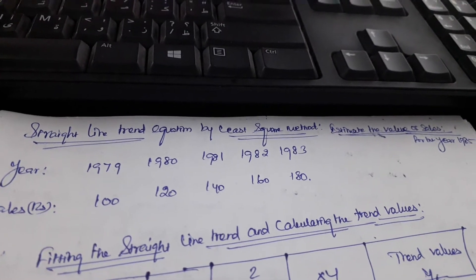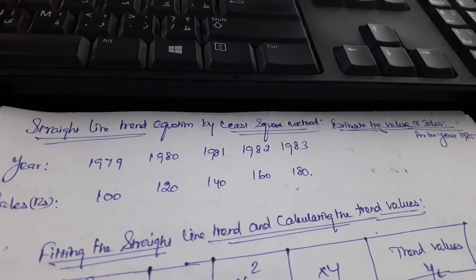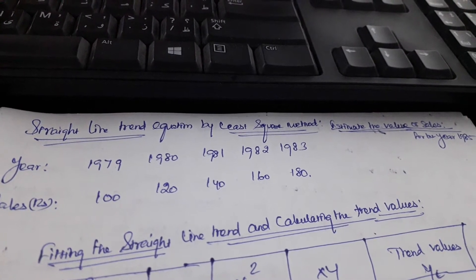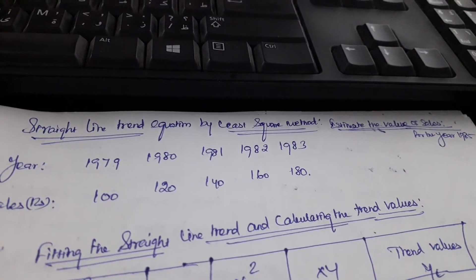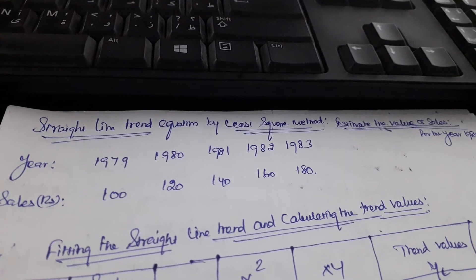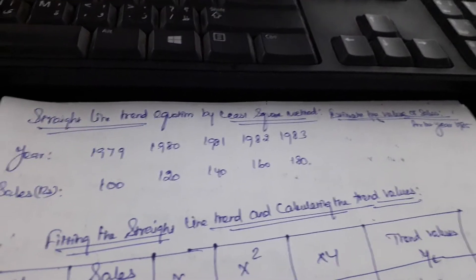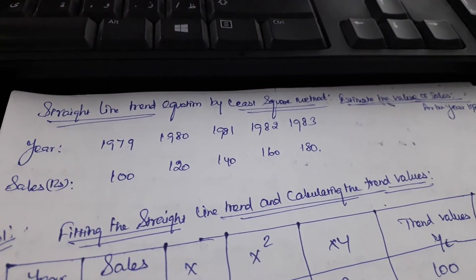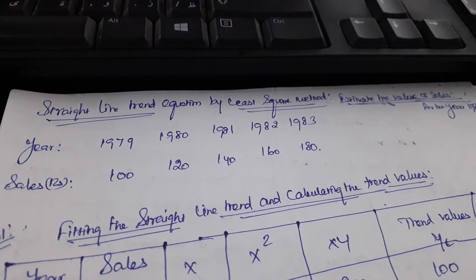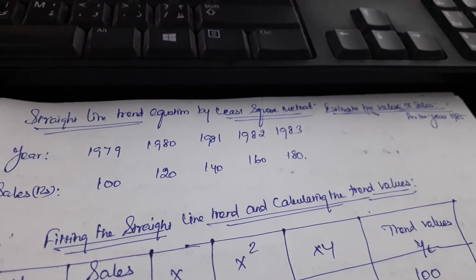Good evening everyone. We are going to look at an important topic: straight line trend equation by least square method. It's an important unit of business statistics in the time series unit. We have some given data - the first row is year-wise data, the second one is sales data, through which we need to find out the trend of values.